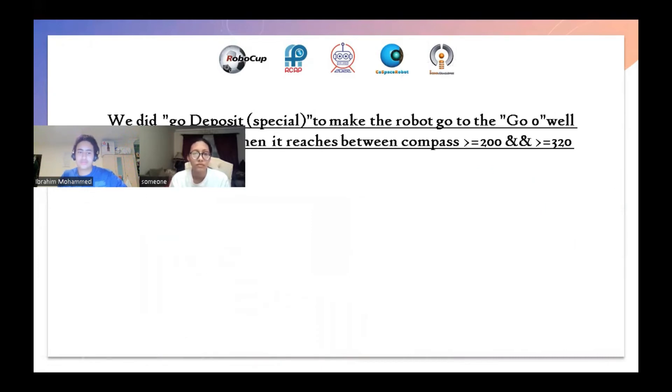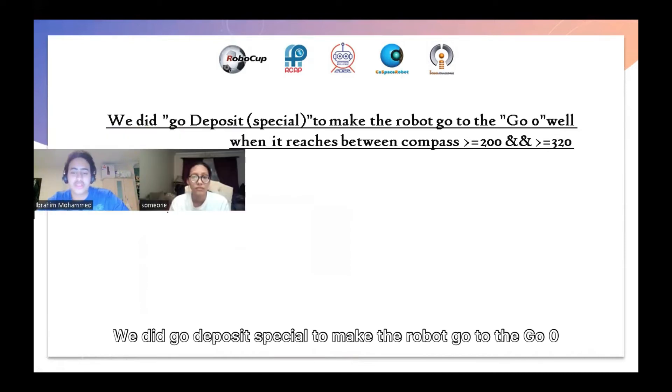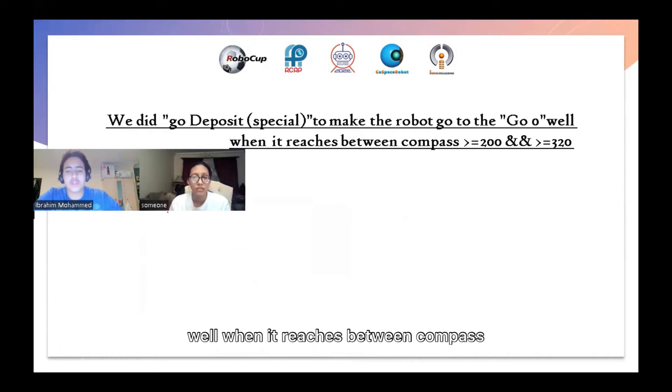Deposit 3: We did a go to deposit special to make the robot go to the wall when it reaches between compass bigger than or equal 200 and bigger than or equal 320.